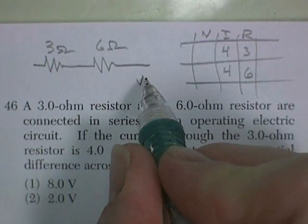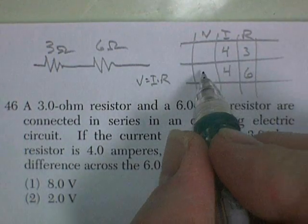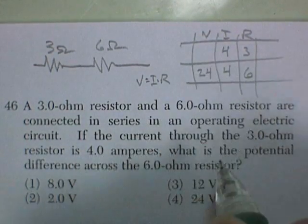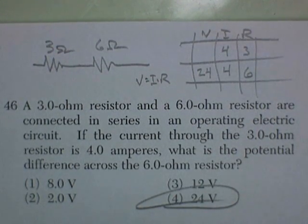And voltage equals current times resistance. So, let's see, 6 times 4, that's about 24 volts. And there's 24 volts. There we go.